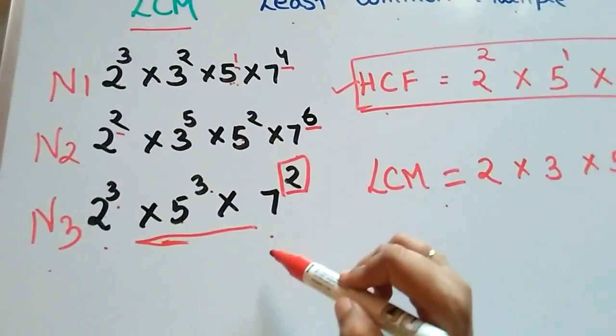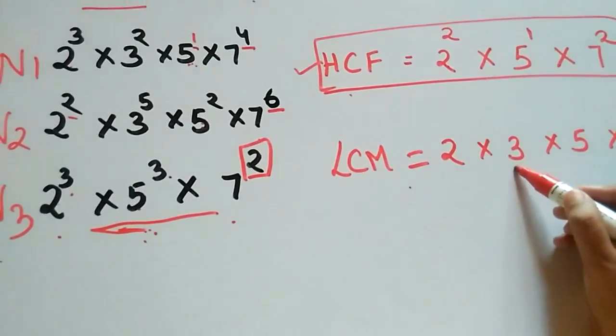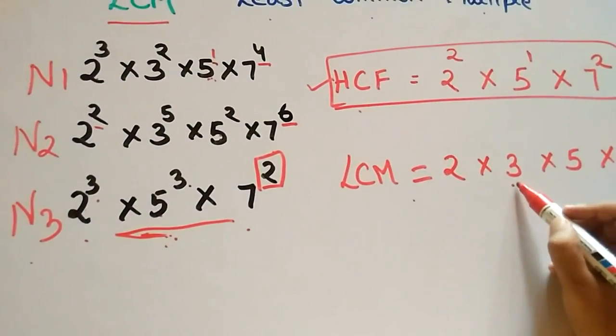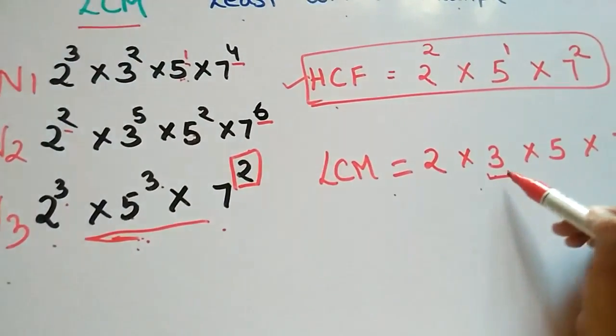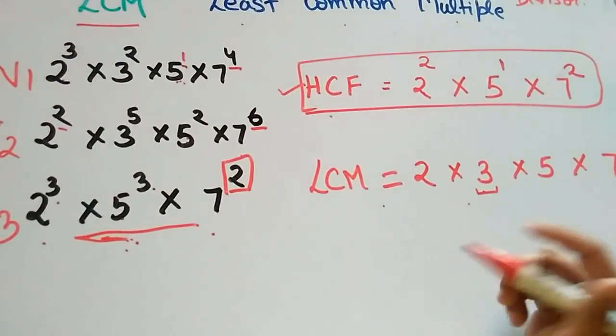All these numbers are there in all three. 3 is not there in N3, but still we are writing 3. Because even if 3 is there in LCM, then also N3 will divide it, leaving 3 as the remainder.